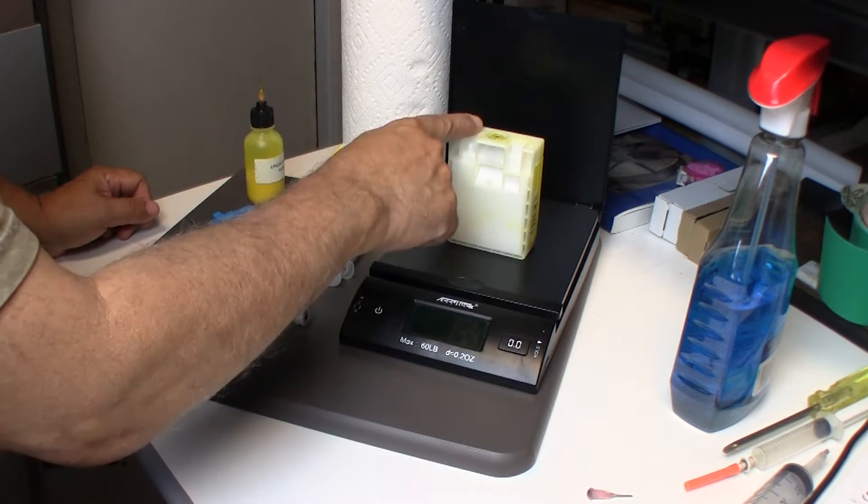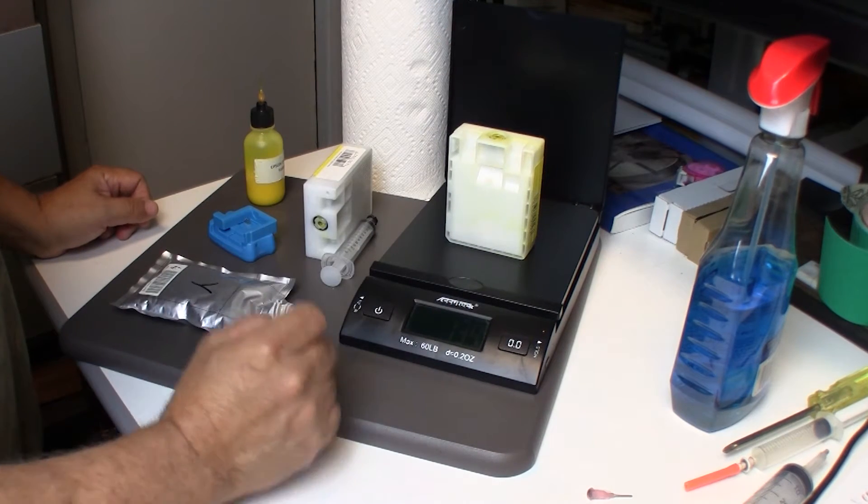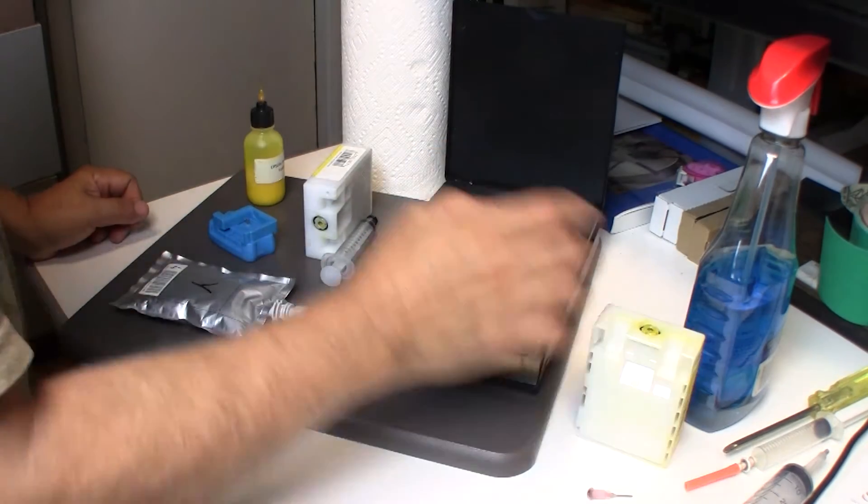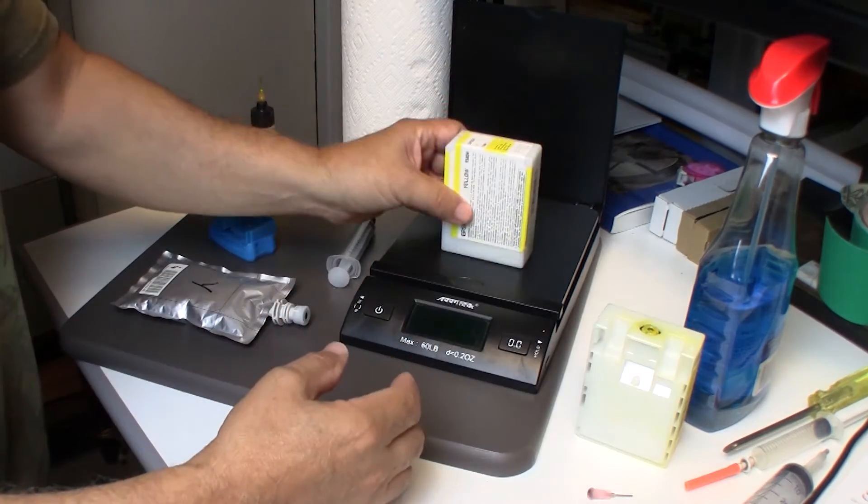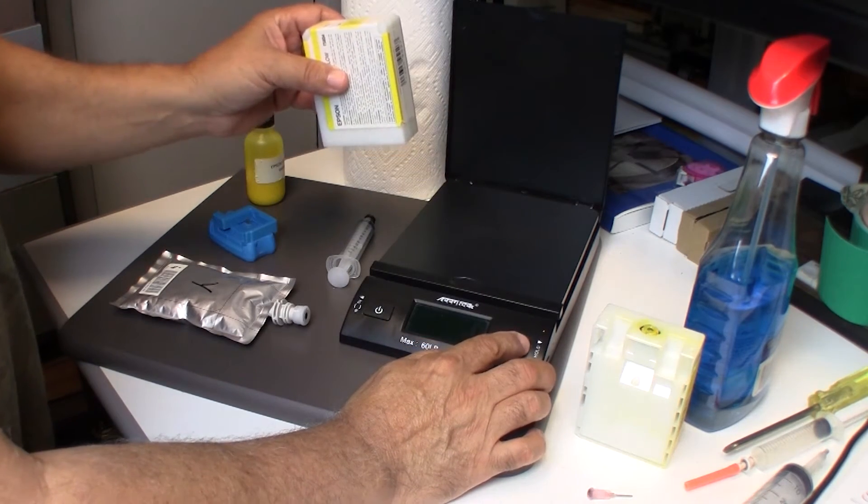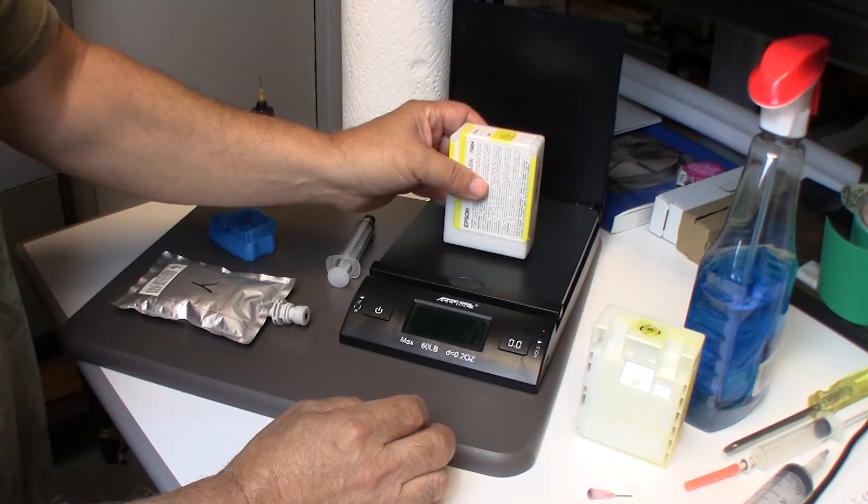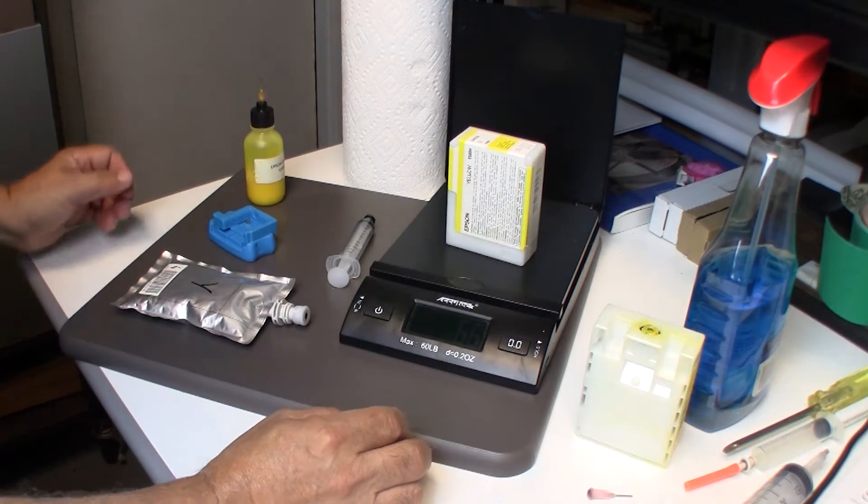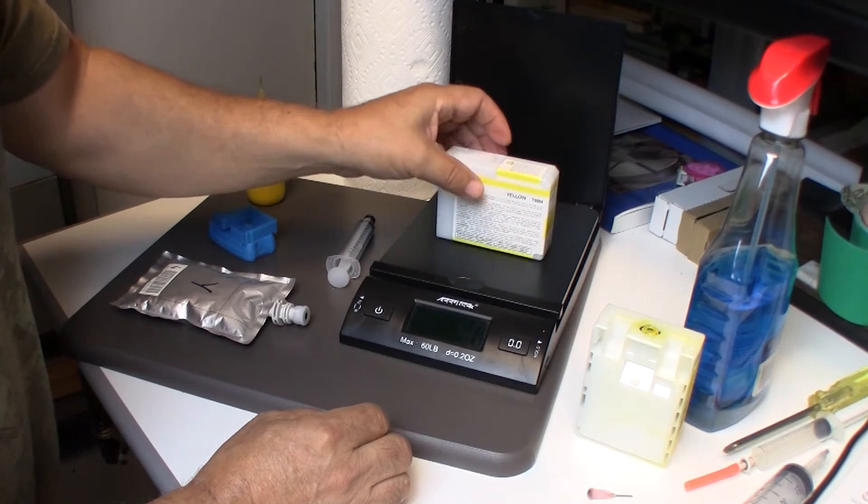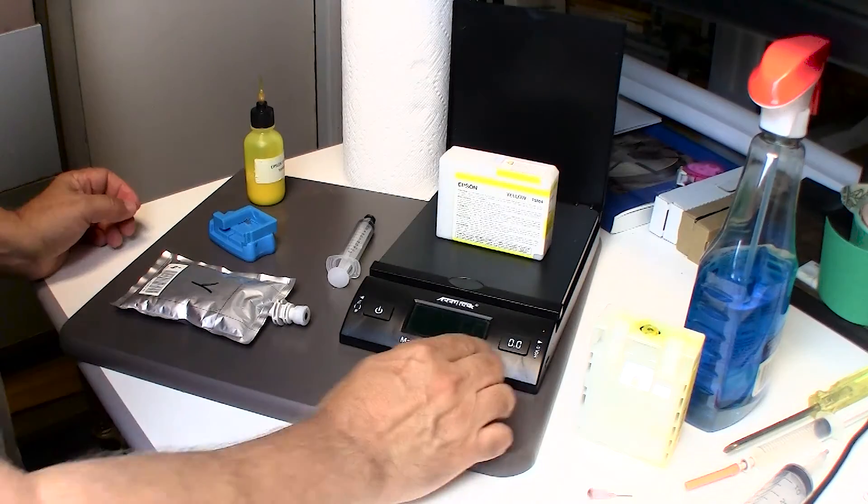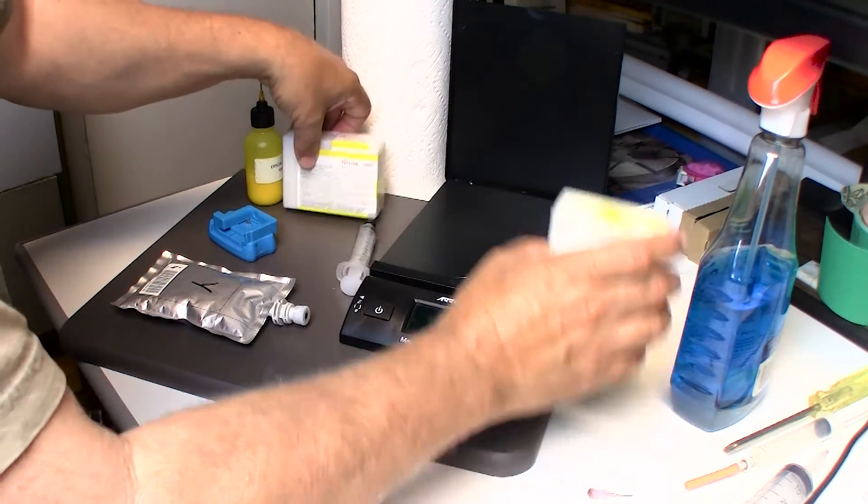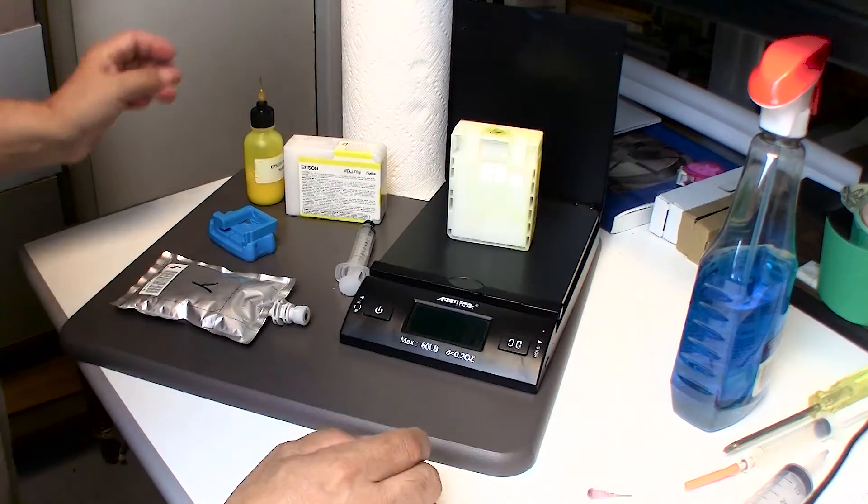I'm at 134 right now, so you would subtract 134 from 150 and that would be the amount of ink you need to bring this cart up to factory full condition. If you want to do it the easy way, just put an empty cart on there. Reset this to zero, put the empty cart like so, and then zero it out.